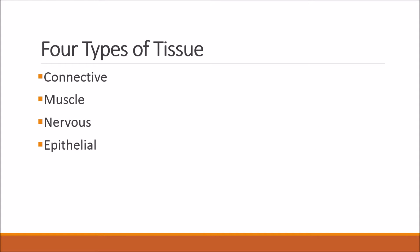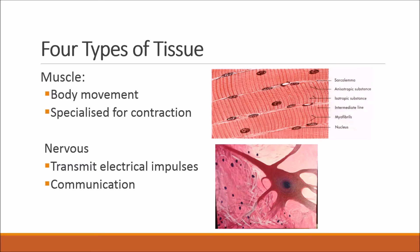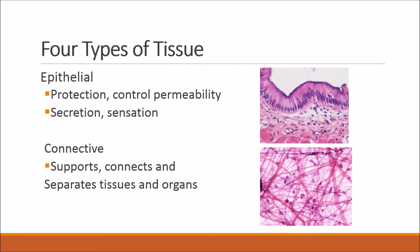In the human body there are four types of tissue: connective tissue, muscle tissue, nervous tissue and epithelial tissue. Muscle tissue is used for bodily movement and is specialised for contraction. Nervous tissue is used to transmit electrical impulses between cells and for communication. Epithelial tissue is used for protection, control and permeability, secretion, and helping to provide sensation.